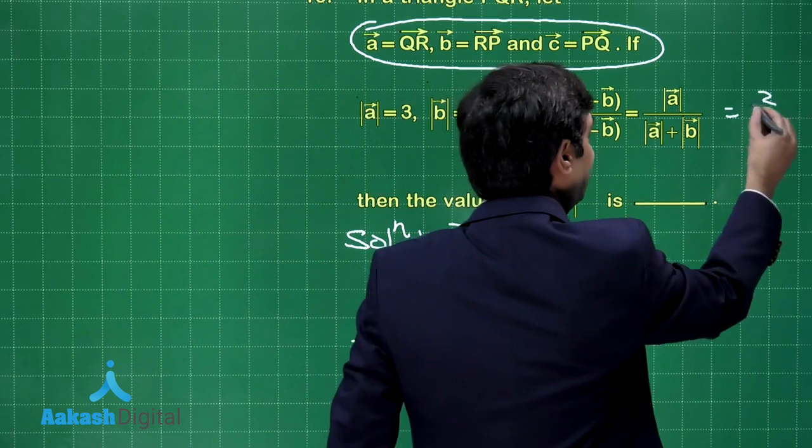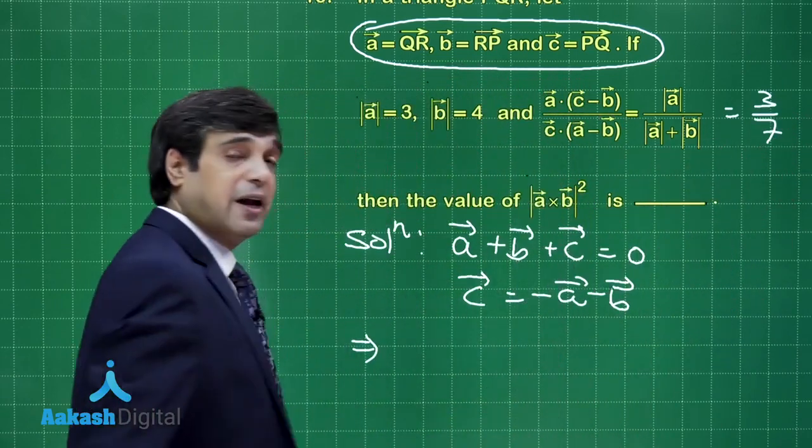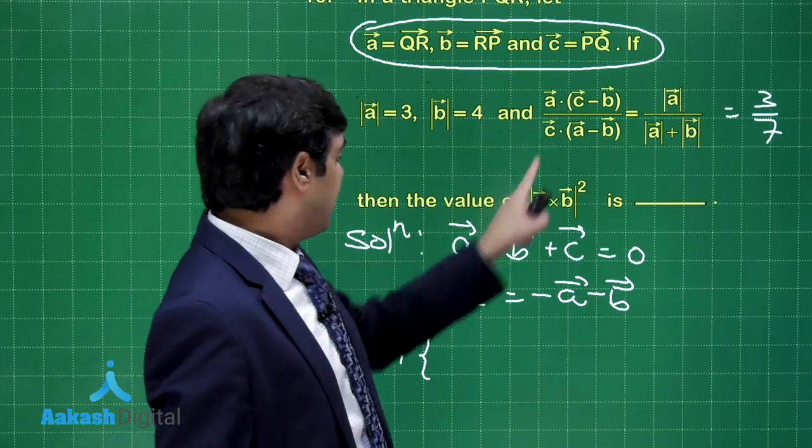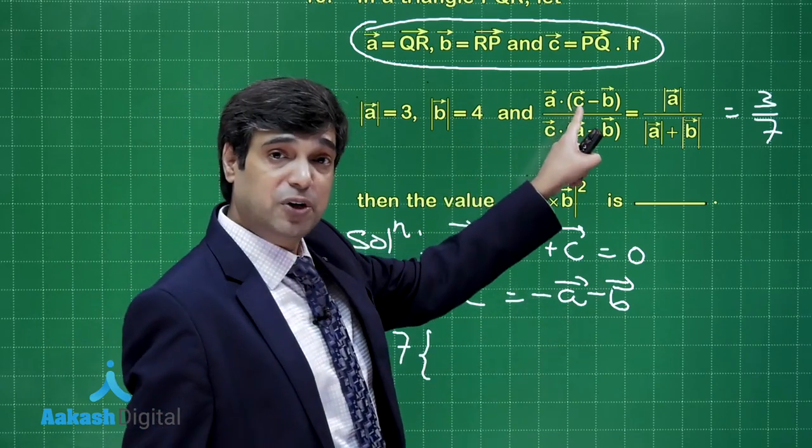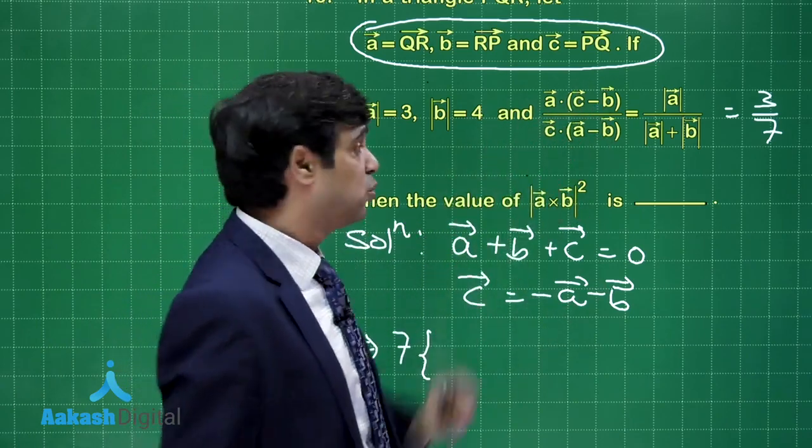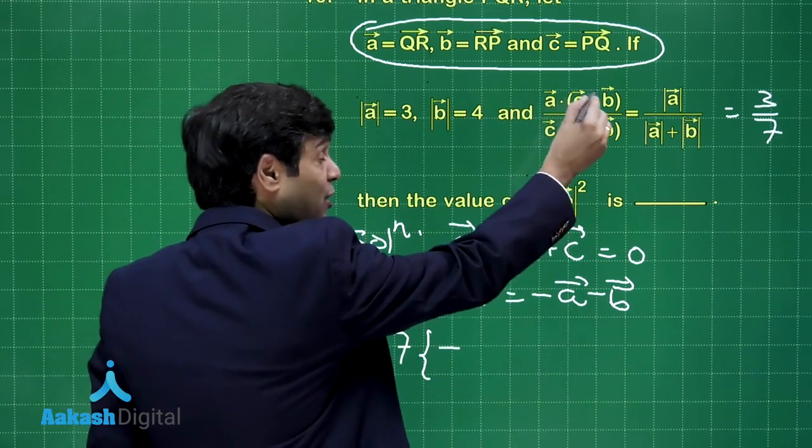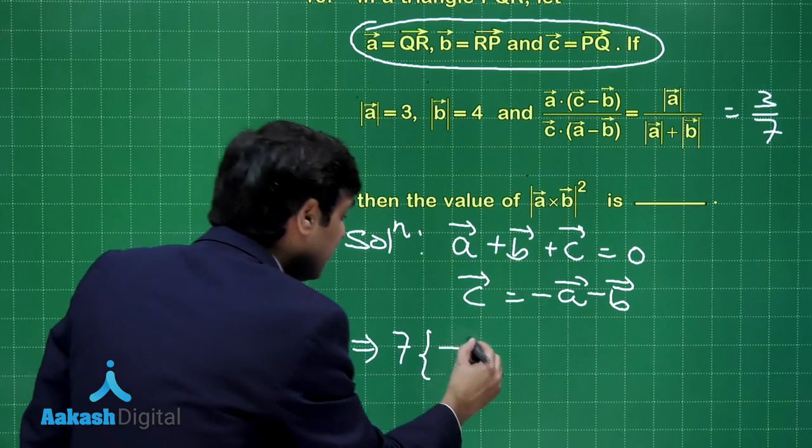So let's write here, this is 3 by 7, cross multiply. So this gives you 7 times C vector is minus A minus B put it here. So we have minus A minus 2B. So this is minus A dot A, that is mod A square, 9.